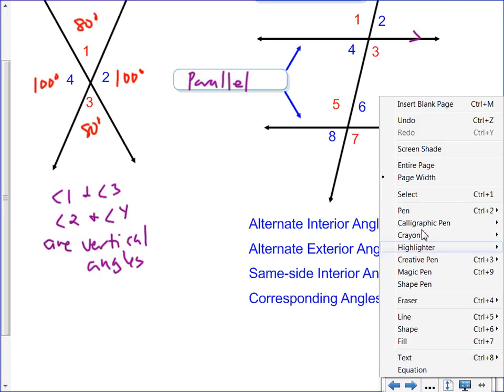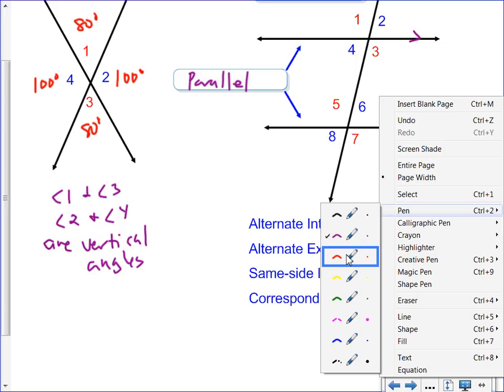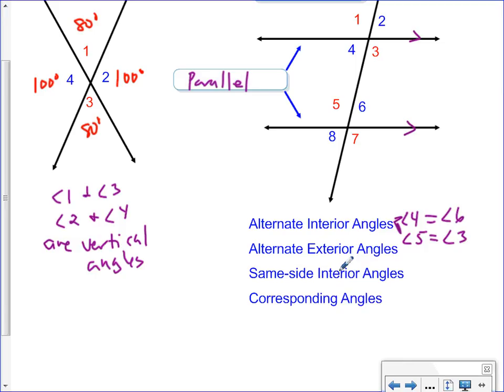Alternate exterior. An exterior angle is an outside angle. Give me an outside angle. One. Very good. Would be the same as seven. They would have the same measure. They're alternate, again, alternate opposite sides of the transversal, and an exterior is outside. So angle one would equal angle seven. Anything else? Angle two would equal angle eight for alternate exterior.